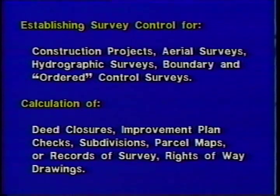Another example of survey traverse is the establishment of control for construction staking. On these types of surveys, the random control points, or traverse stations, are usually located on or near the area in locations that provide safety and convenience for the surveyor.